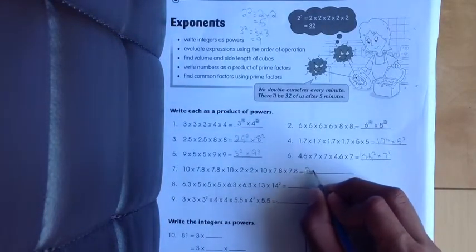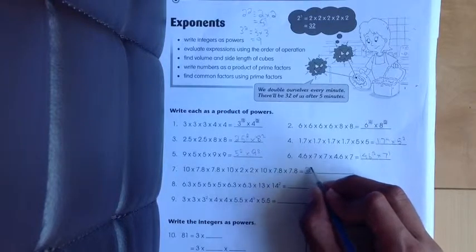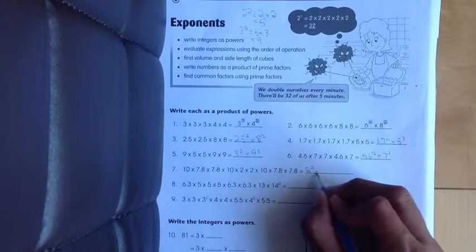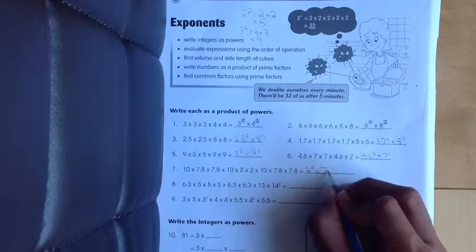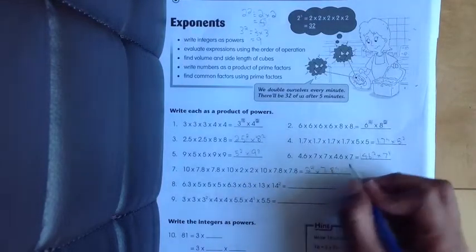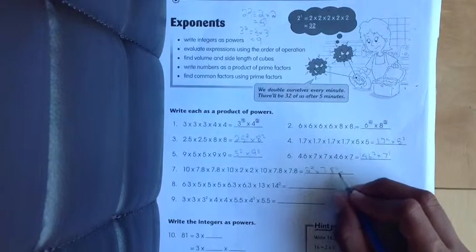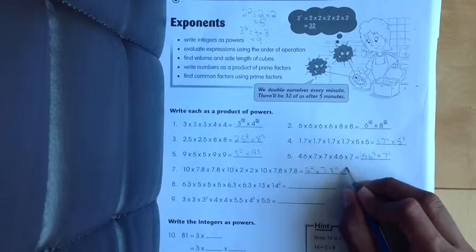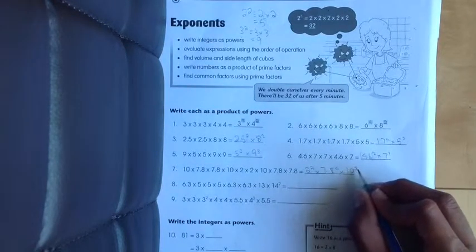Let's do question number 6: 4.6, there are 2 4.6's, then 6 6's, times 7, there are 3 7's. And now 10 times 7.8 times 7.8 times 10 times 2 times 2. In this question there are 3 different numbers. Let's start with 2. There are 2 2's. Times 7.8, four 7.8's, times 10, there are 3 10's, so 10 to the power of 3.